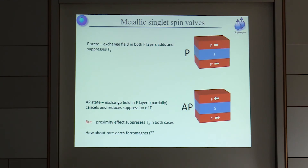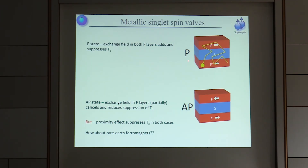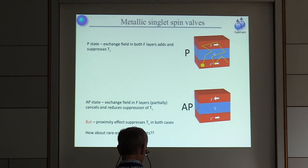You expect to be able to get a critical temperature difference between those two states. A key aspect of these is that you have quite a strong proximity effect, which is also tending to depress the critical temperature regardless of the spin orientation of the ferromagnet. The pairs of electrons wander all over the system, meaning the critical temperature is depressed and the measured change in critical temperature is actually pretty small for most of these devices.